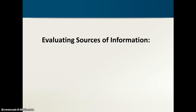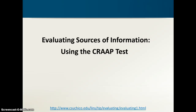The method we're going to talk about today can apply to any type of information, but we're going to be focusing primarily on websites since that's where people tend to go for a lot of their information. The method is called the CRAAP test. It was created by some librarians at Cal State Chico, and it's a way of taking a given source and looking at it from five different angles to get a composite picture of the value or worth of that source.